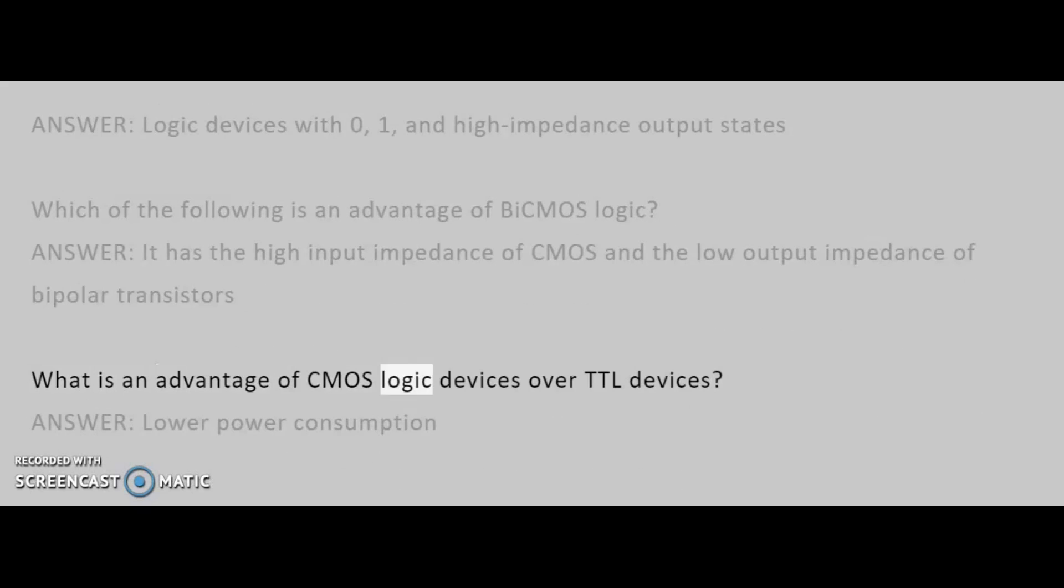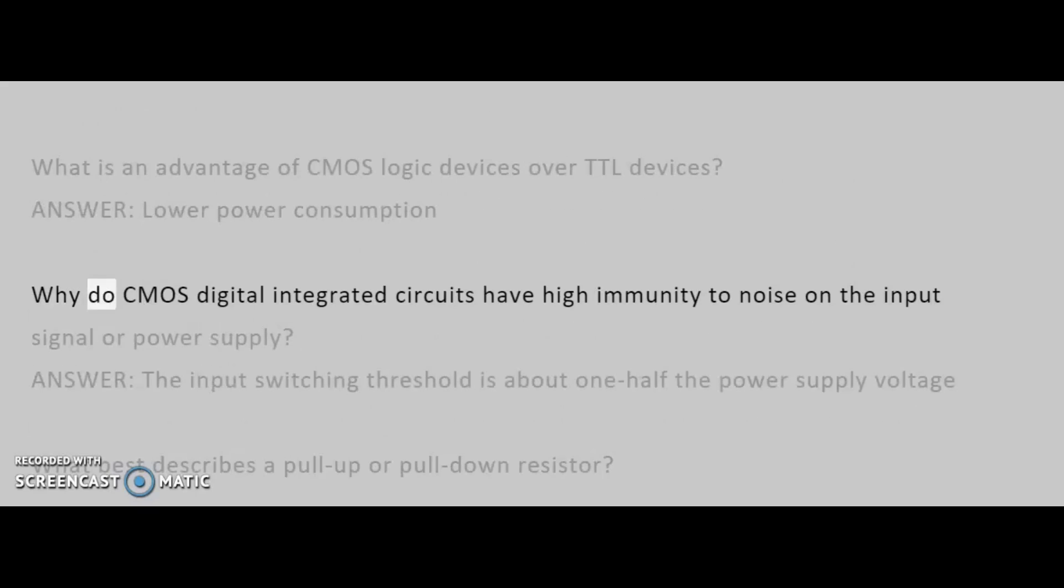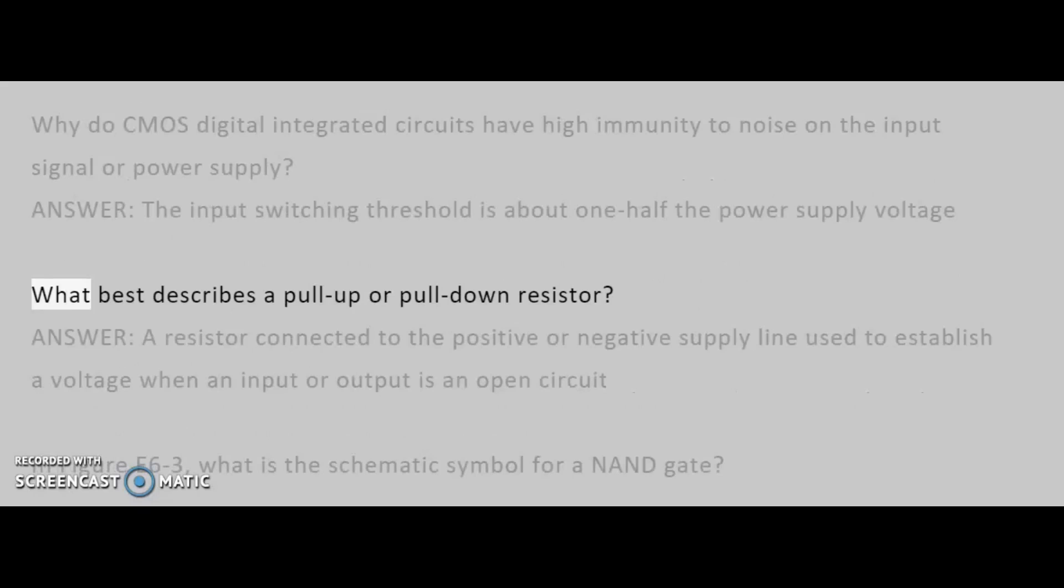What is an advantage of CMOS logic devices over TTL devices? Answer: lower power consumption. Why do CMOS digital integrated circuits have high immunity to noise on the input signal or power supply? Answer: the input switching threshold is about one-half the power supply voltage. What best describes a pull-up or pull-down resistor? Answer: a resistor connected to the positive or negative supply line used to establish a voltage when an input or output is an open circuit.